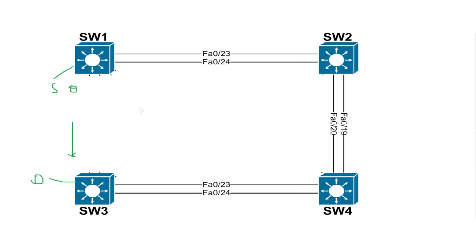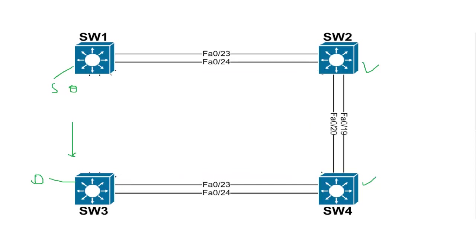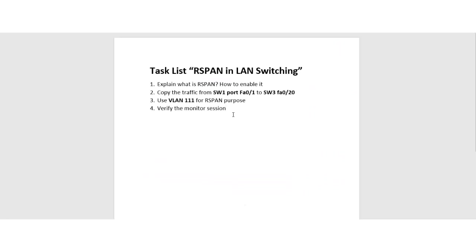In the previous lab when I was talking about SPAN, both source and destination ports were in the same switch. Now they will be in different switches. Switch 2 and Switch 4 are in transit, so the captured traffic will flow through them. This is the way it works.